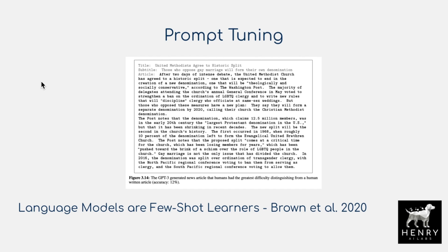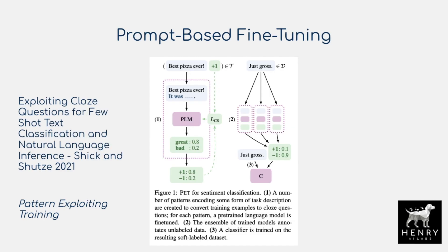To further cement this: prompt tuning is looking for different prompts to append to the input. In GPT-3, prompts for news article generation include the title, subtitle, and then the article — you could imagine adding more examples or additional facts. These ideas motivate prompt tuning — tuning the prompt itself — compared to prompt-based fine-tuning, best known from pattern exploiting training.